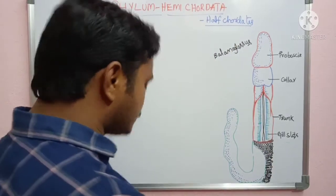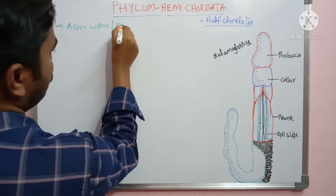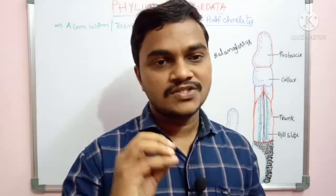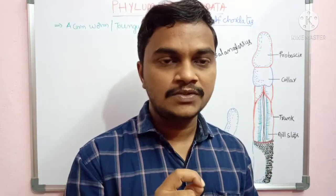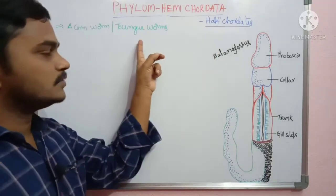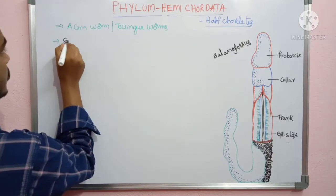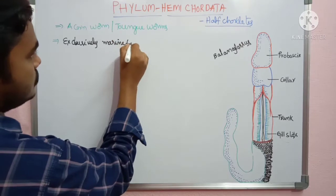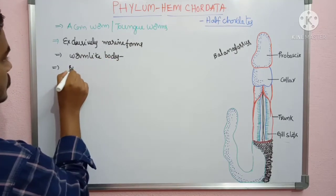Hemichordates are commonly called as acorn worms or tongue worms. The respiratory system of hemichordates contains tongue bars, that's why these are called as tongue bars. All hemichordates are exclusively marine forms. The body is worm-like, and these are burrowing forms.